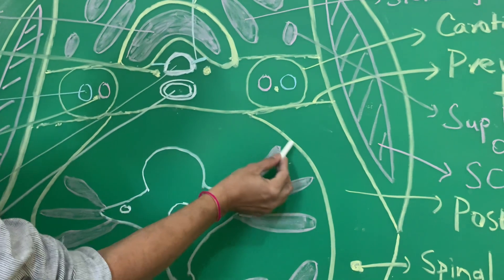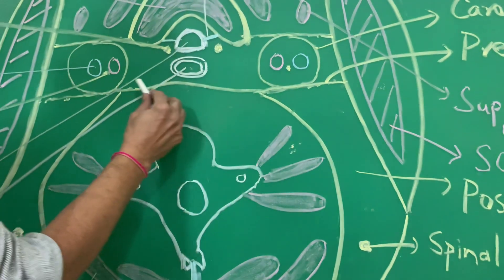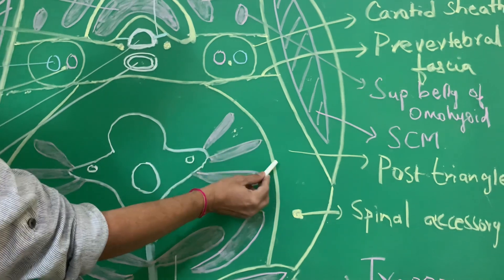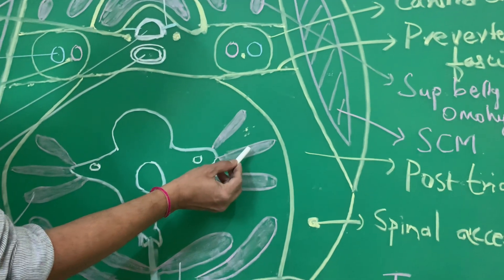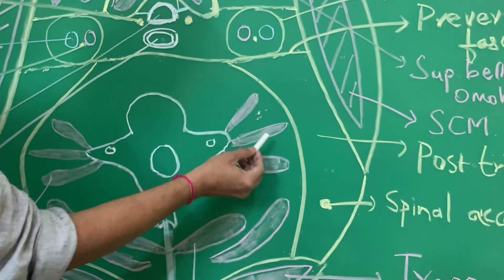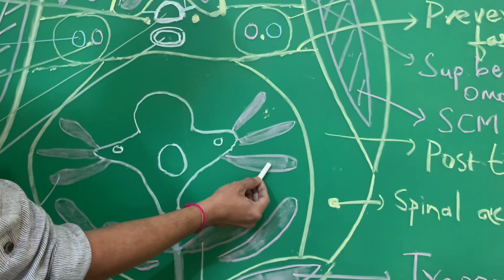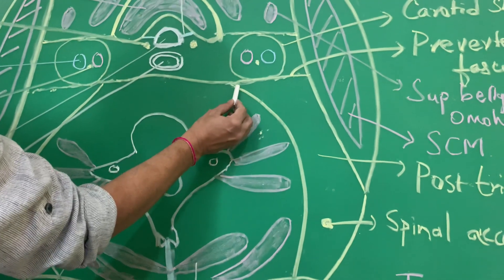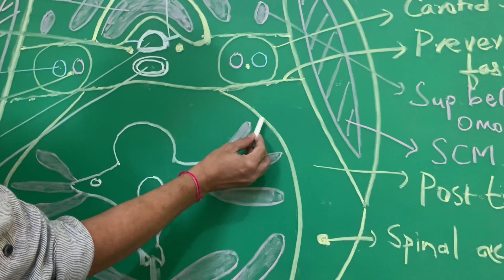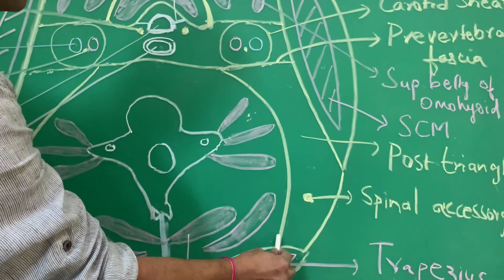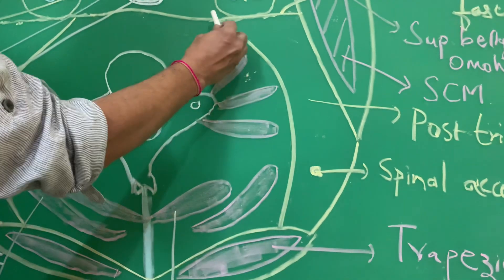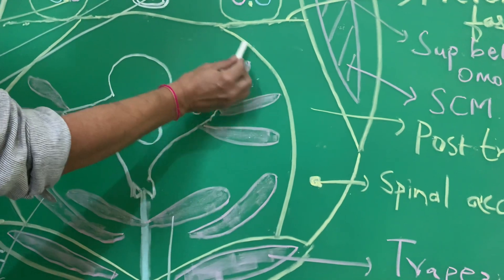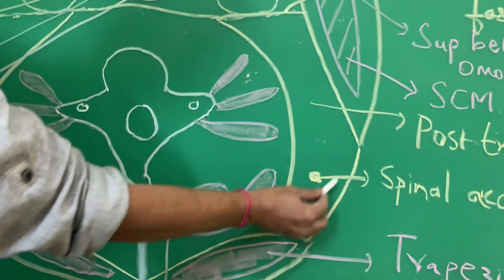This pre-vertebral fascia gives off an offshoot or process on either side, which passes over and covers muscles such as scalenus anterior, scalenus medius, levator scapulae, semispinalis capitis, and splenius capitis. This process ends under cover of the trapezius muscle, where it is lost.